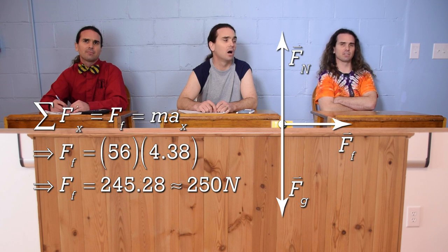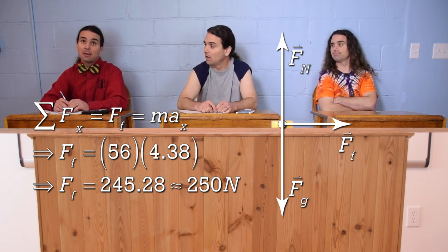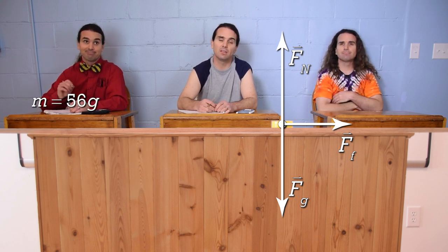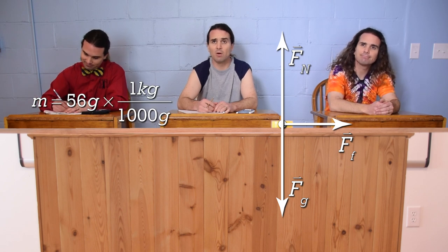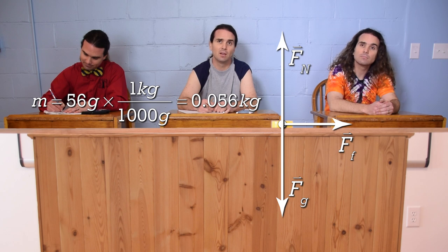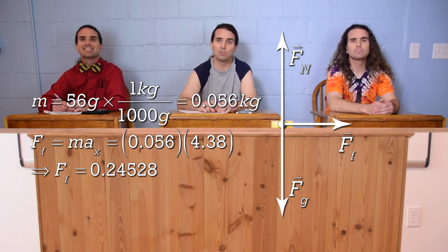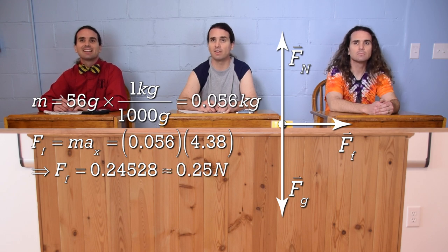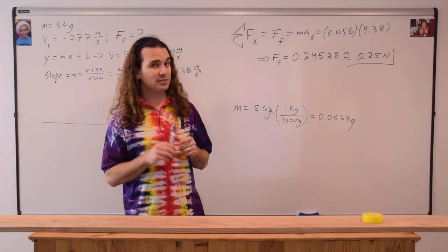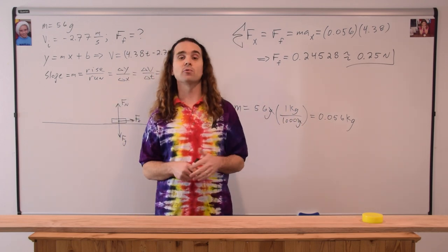We forgot to convert the mass from grams to kilograms. Because a newton is a kilogram meter per second squared, we need the mass in kilograms. So let's multiply 56 grams by 1 kilogram over 1,000 grams to get 0.056 kilograms for the mass of the puck. Substituting that back into our equation gives us 0.24528, or with two sig figs, 0.25 newtons. That is correct. The force of friction between the street hockey puck and the wooden board is approximately one fourth of a newton.